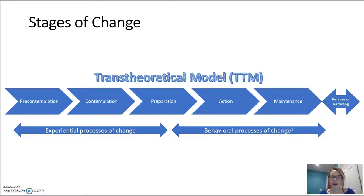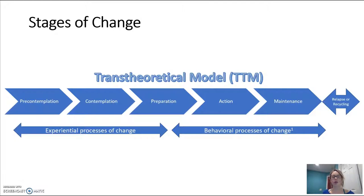This is the transtheoretical model and the stages of change construct. This model assumes that individuals move through a process of five stages when they're moving towards a behavior change. This doesn't necessarily mean that we move in one direction through these stages — it's more a dynamic process that occurs based on people's readiness to change, and patients go through a variety of social and behavioral processes in order to move towards change. Understanding where patients are in this process and assessing their readiness can really help us make better informed intervention designs.